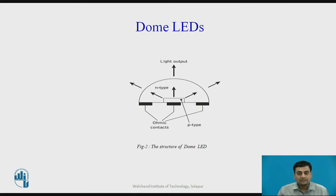The next LED structure is the dome LED. A hemisphere of n-type gallium arsenide material is formed around a diffused p-type region. The diameter of the dome is chosen so that the maximum amount of internal emission reaches the surface within the critical angle of the gallium arsenide and air interface. This gives higher external power efficiency than the planar LED. However, the dome must be far larger than the active recombination area, giving a greater effective emission area and thus reducing radiance, resulting in non-intense emission.